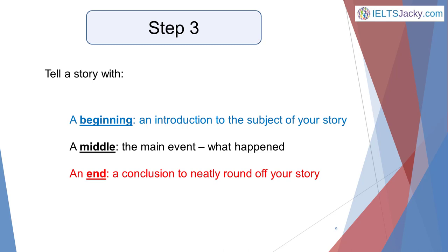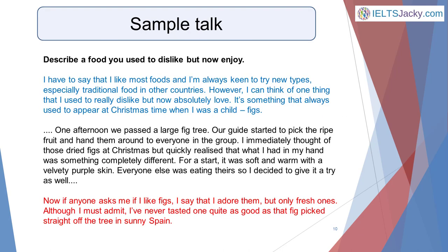I've used colour coding again in the sample talk on the next slide, this time to help you identify the different parts of the story. There isn't room on the slide for the whole two minute talk, so I've included the beginning, one paragraph of the main part of the story, and the conclusion at the end. You can see the whole talk on the Strategy 3 page on my website — the link is in the notes at the bottom of this video.